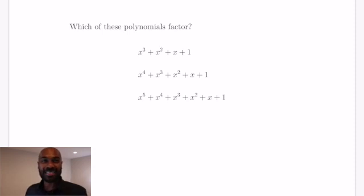So imagine you were given the task of figuring out which of these polynomials right here is factorable into a product of polynomials with integer coefficients. We have a degree 3, degree 4, and a degree 5 polynomial. What happens for general n?